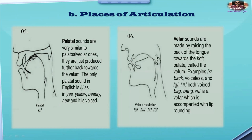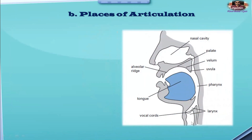Number six: velar sounds. Velar sounds are made by raising the back of the tongue towards the soft palate — the velum, near the uvula. For example, /k/ in 'back' is voiceless, and /g/ in 'bag' is voiced. The /ŋ/ in 'bank' is a velar sound accompanied with lip rounding. So sounds /k/, /g/, and /ŋ/ are known as velar sounds — we are touching the back of the tongue to the velum.